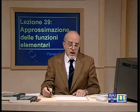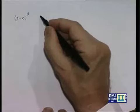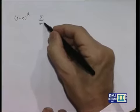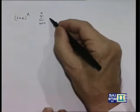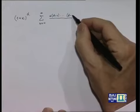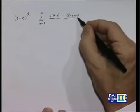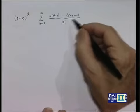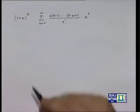La serie di Taylor è quello che si ottiene sommando questa quantità per n che va da 0 a infinito: è la somma per n da 0 all'infinito di [alfa(α-1)···(α-n+1) diviso n fattoriale] moltiplicato x elevato alla n.